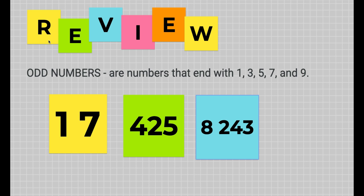So these three examples are all odd numbers: 17 is an odd number, 425 is also an odd number, as well as 8,243 — because the numbers end with 7, 5, and 3. If you divide them by 2 they will have a remainder of 1.